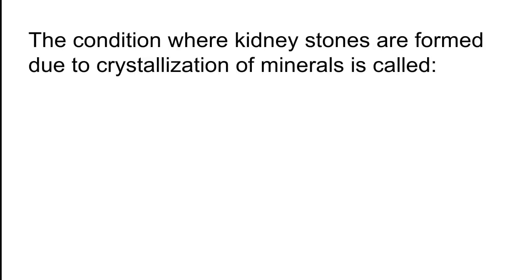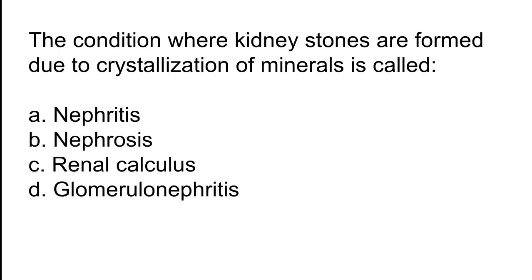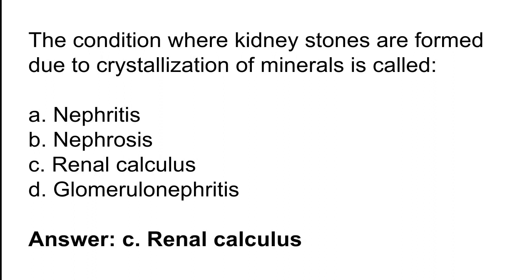The condition where kidney stones are formed due to crystallization of minerals is called? Options: A) Nephritis, B) Nephrosis, C) Renal calculus, D) Glomerulonephritis. The correct answer is option C. The condition where kidney stones are formed due to crystallization of minerals is called renal calculus.